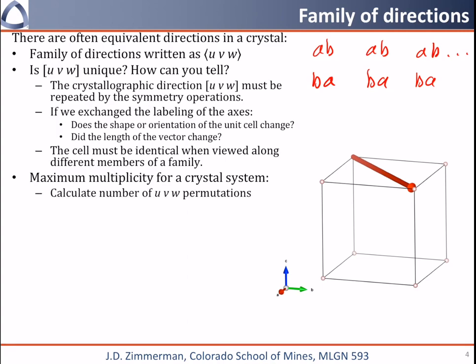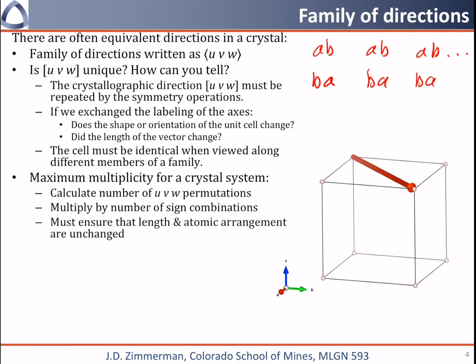The way we do this is we calculate the number of allowed u, v, and w permutations, and then we will multiply that by the number of sign combinations of those u, v, w values. When you do this, make sure that the length and atomic arrangement are unchanged so you're not changing the unit cell when you do one of these permutations or sign flips. There will be somewhere between 1 and 48 equivalent directions per family, 1 direction in certain low symmetry triclinic systems and up to 48 in the high symmetry cubic systems.